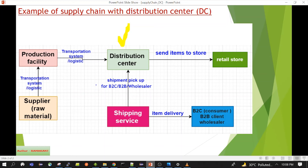As per the requirement of the business, we can set up different kinds of distribution centers. We can set up one for product mixing, one for cross-docking, and one for the change of mode of transport. For different purposes we can set up different distribution centers, or a single distribution center can also work for all types of actions. It depends on the need of the business.